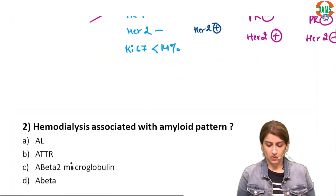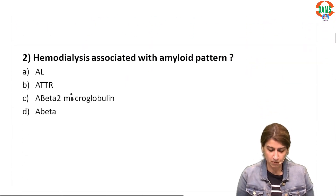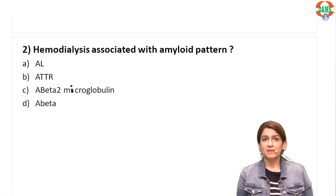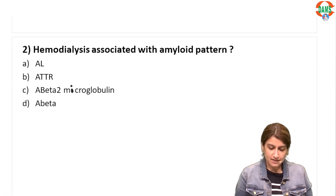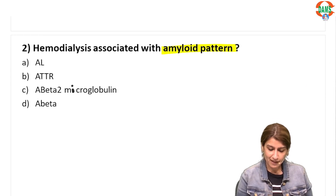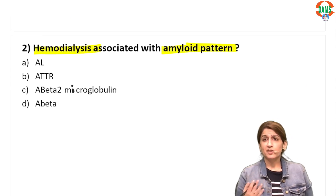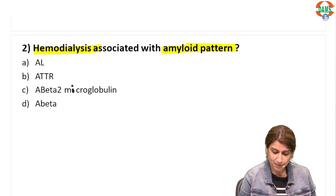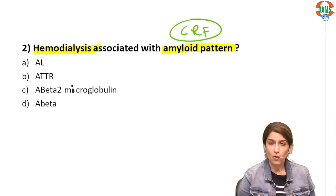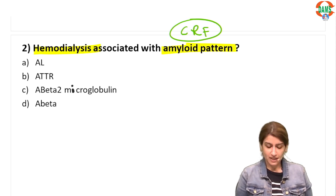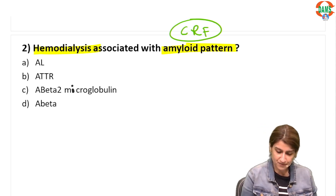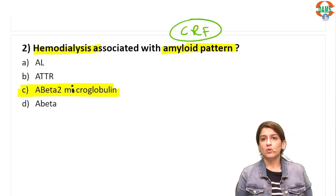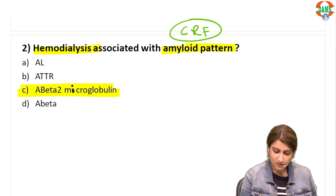Question two: hemodialysis is associated with which amyloid pattern? The question can also be asked as amyloid pattern in a patient with chronic renal failure. The answer is option C: Aβ2-microglobulin.